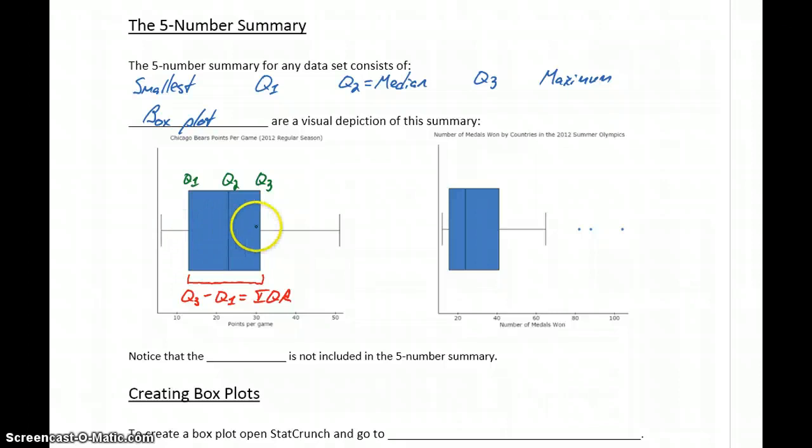So we have the interquartile range represented by this box, and then two lines sticking out to these fences. Those fences, in this case, represent the maximum and minimum values in our dataset.